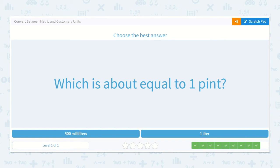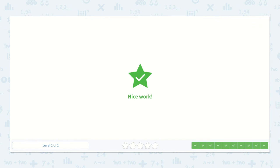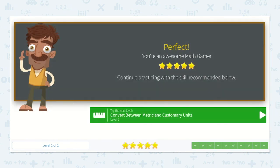Which is about equal to 1 pint? Well, I know we talked about quarts before as well. And I know that there are 2 pints in a quart. So it would be about half of a quart, which would be about half of a liter. So it would not be close to 1 liter. It would be closer to 500 milliliters. Amazing work, friends.